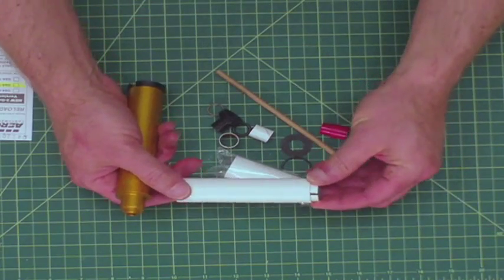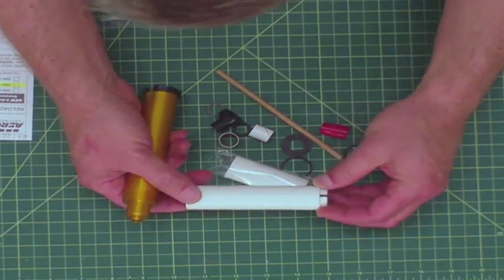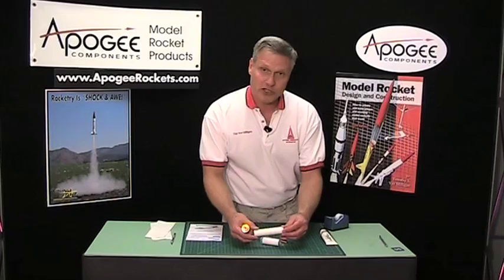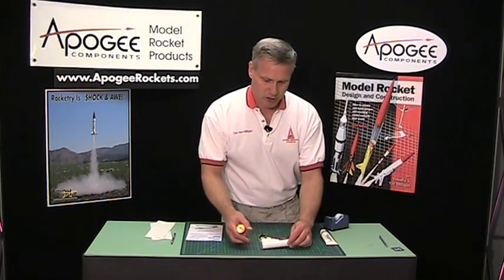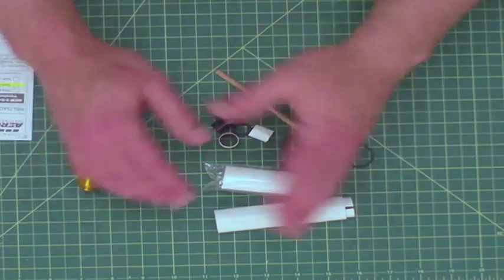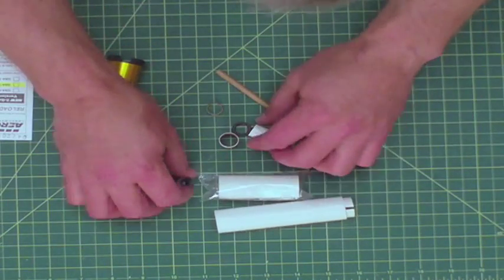We're going to be assembling the G64-7 White Lightning motor, which is a full 120 Newton second motor. When you get the reload kit, you can spread everything out and inspect everything.